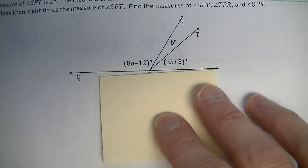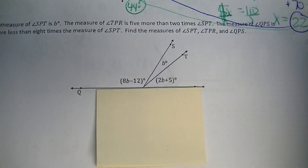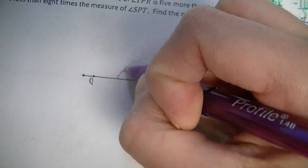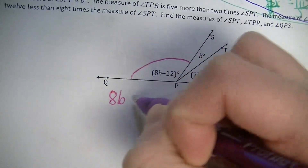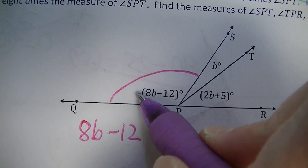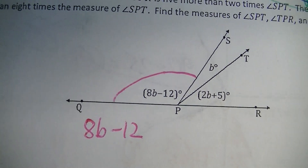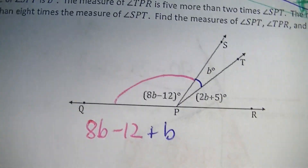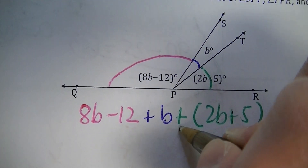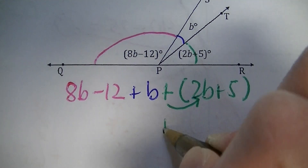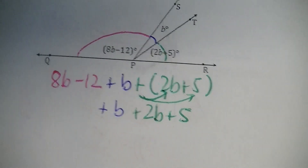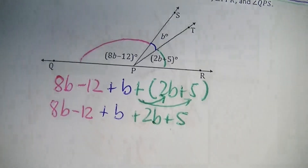All three of those angles are angles on a line. Angles on a line have a sum of 180 degrees — not 360, that's angles at a point. So I'm going to take these angle measurements and add them: 8B minus 12, plus B, plus 2B plus 5. I'll distribute and bring everything down. And angles on a line have a sum of 180 degrees. So that's our equation.